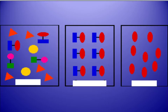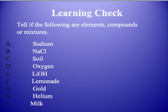Here's another learning check: look at three pictures and figure out which one represents an element, compound, or mixture — then check your answers with your teacher. For the last learning check, look at the examples and classify each as an element, a compound, a homogeneous mixture, or a heterogeneous mixture, and check your answers with your teacher.